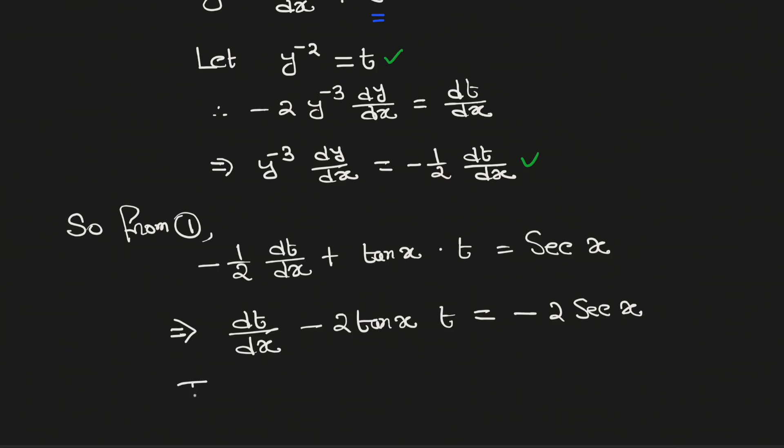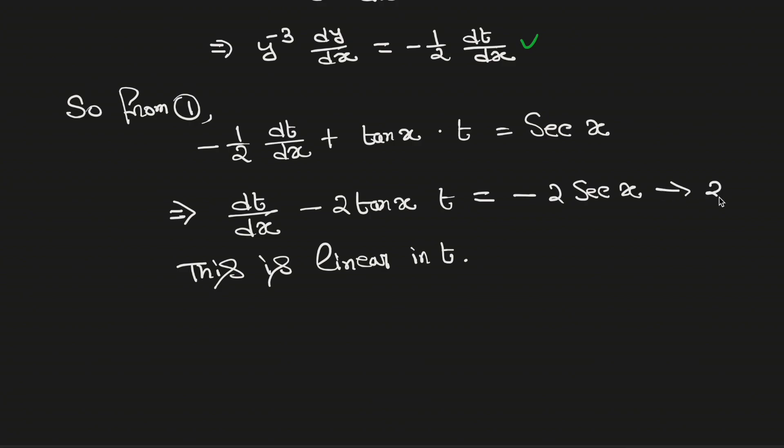Note that this is a linear differential equation in variable t. Name this as equation number 2. Now the integrating factor of equation 2 is e to the power integration of negative 2 tan x dx. We know that the integration of tan x equals log sec x.